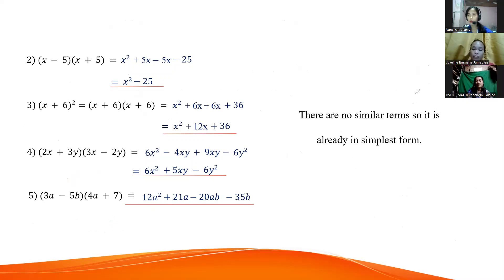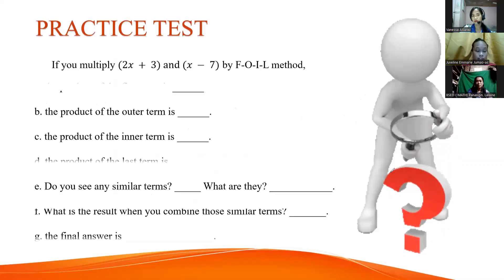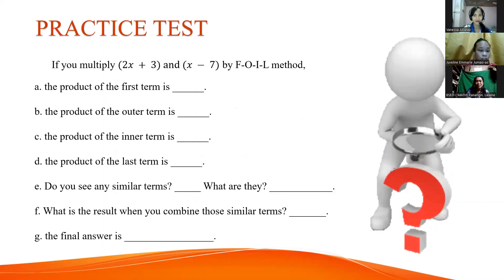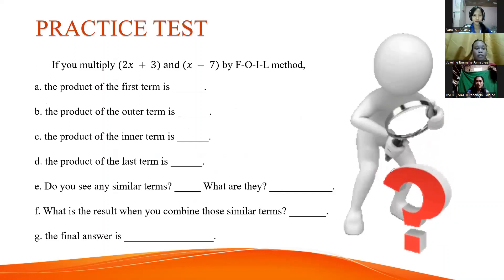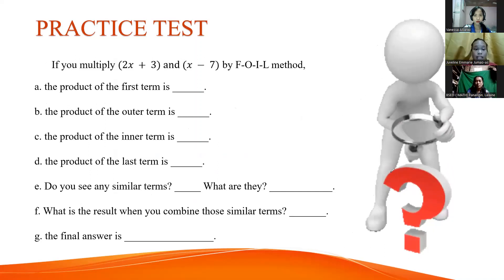Thank you so much, Miss Vanessa. Do you have questions or clarification about our topic for today? If you don't have question or clarification, I will present to you our practice test for this lesson. I will present the questions. This is the questions. The question is, if you multiply 2x plus 3 and x minus 7 by FOIL method.